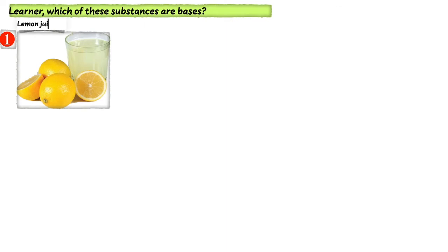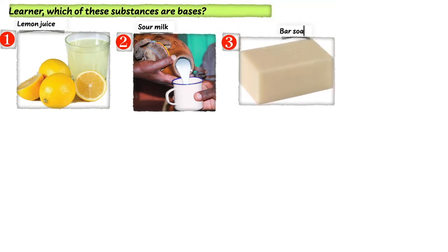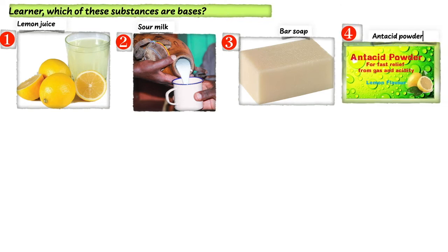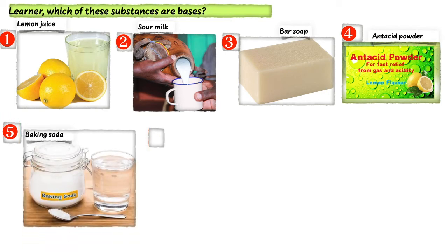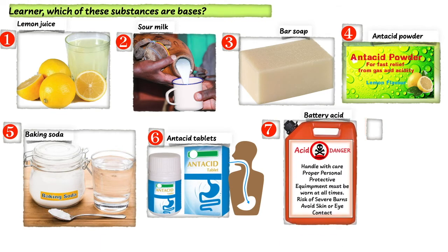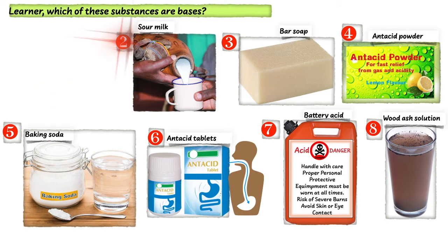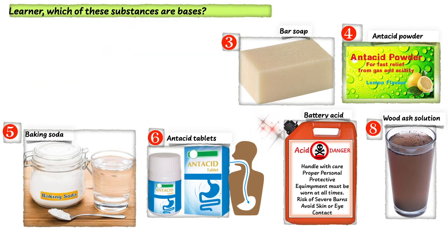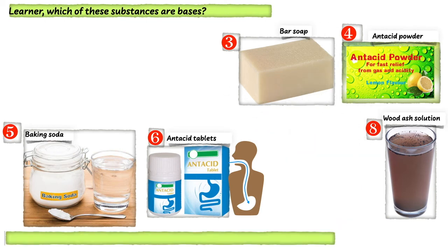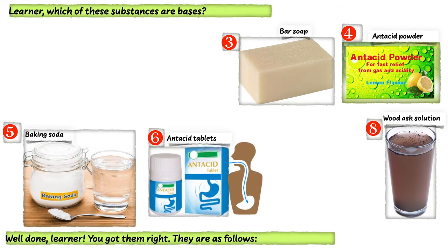Learner, which of these substances are bases? Well done, learner, you got them right. They are as follows. These are the bases: 1. Bar soap, 2. Antacid powder, 3. Baking soda, 4. Antacid tablets, and 5. Wood ash solution.